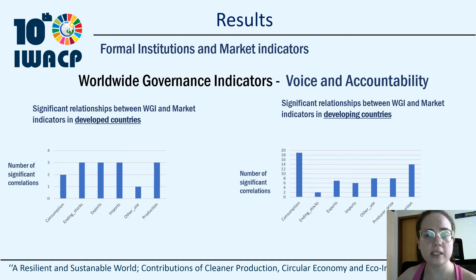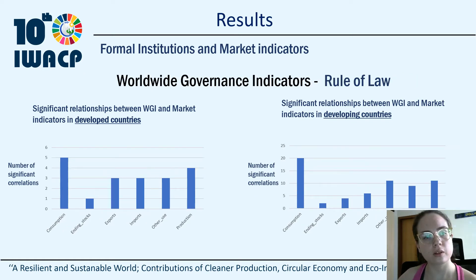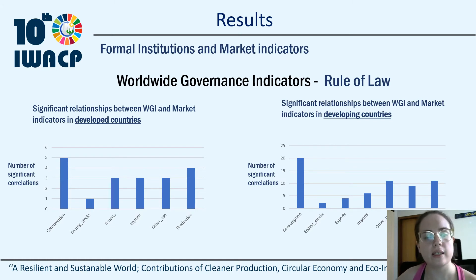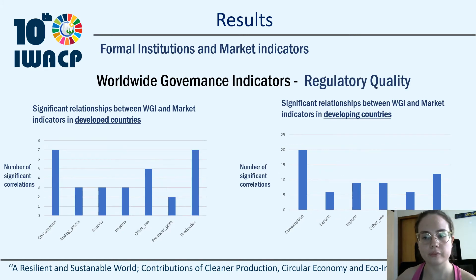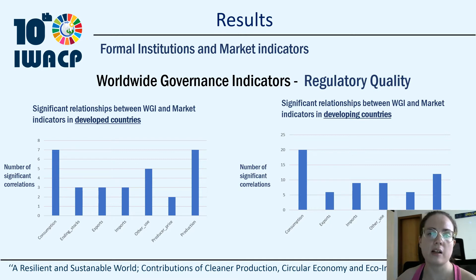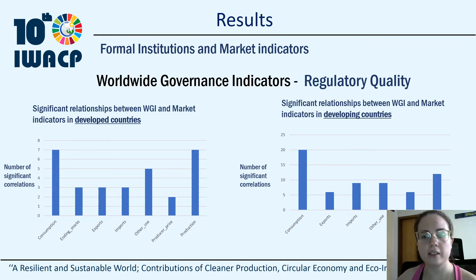Here we can see the values of significant relationships between the formal and market indicators. The rule of law captures perception of the extent to which agents trust and abide by society's rules. Regulatory quality measures the perception of how well the government is able to formulate and implement solid policies and regulations that enable the development of the private sector.